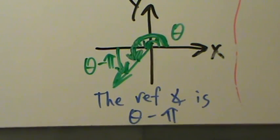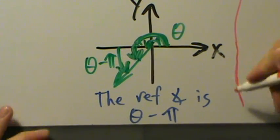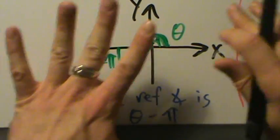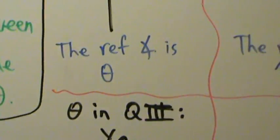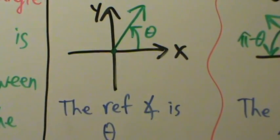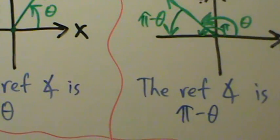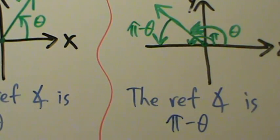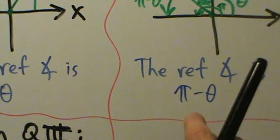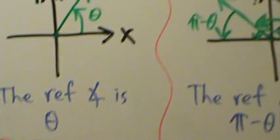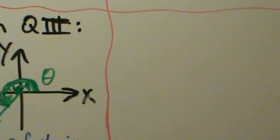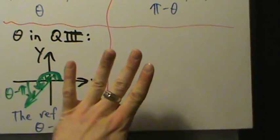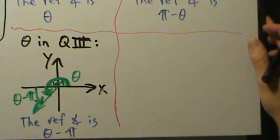I don't recommend you just straight-up memorize these formulas. It's better to understand how they work. It's easy to mix up pi minus theta and theta minus pi, since one is for quadrant two and the other is for quadrant three. Understanding the reasoning is much simpler than memorizing the results.